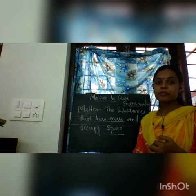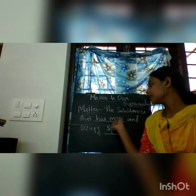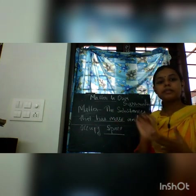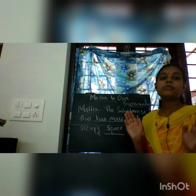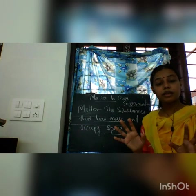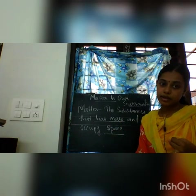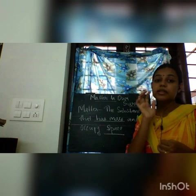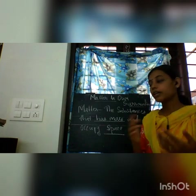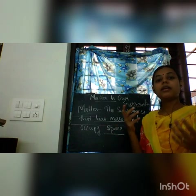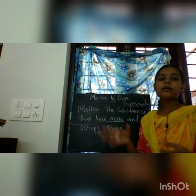Scientists gave a definition for matter: the substance that has mass and occupies space. So matter is something that, if it has mass and occupies space, can be called matter. For example, chair, table, books, rocks, sand — all those things come under matter, because they have a particular mass and they also occupy space.